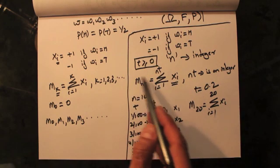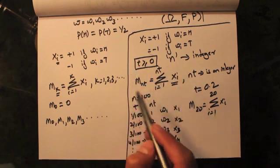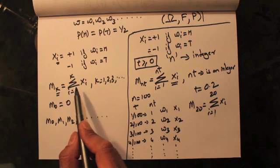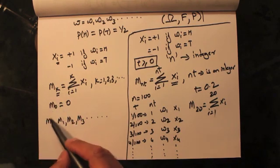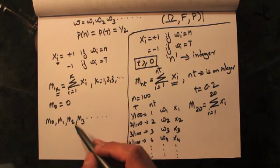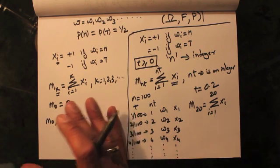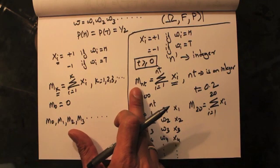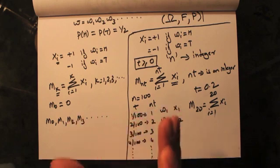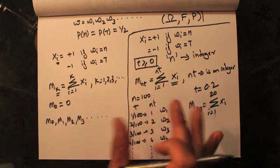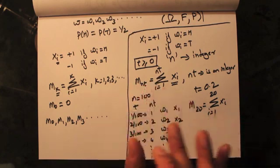Hopefully m of nt is now clear. In the previous lecture, m of k was the symmetric random walk. But when we talk about the scaled symmetric random walk, m of nt by itself is not the scaled version — I will show you the formula for the scaled symmetric random walk next.